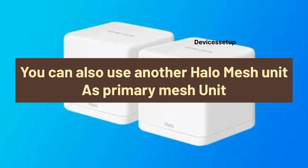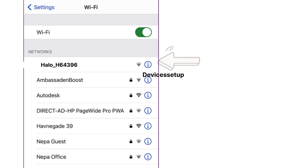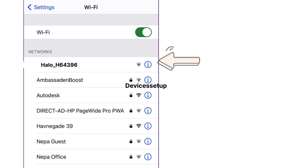Moreover, you can also use another Hello Mesh unit, use it as the primary mesh unit, and then try checking for the Mercosys Wi-Fi again.